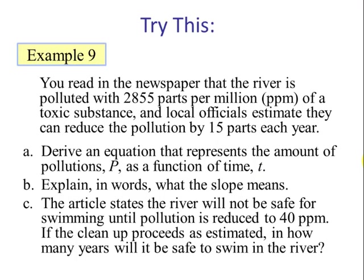Example number 9: You read in the newspaper that the river is polluted with 2,855 parts per million of a toxic substance, and local officials estimate they can reduce the pollution by 15 parts each year. Part A: Derive an equation that represents the amount of pollutants P as a function of time T. Part B: Explain in words what the slope means. And Part C: The article states that the river will not be safe for swimming until the pollution is reduced to 40 parts per million. If the cleanup proceeds as estimated, in how many years will it be safe to swim in the river?